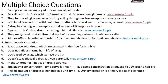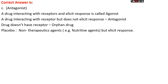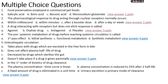The right answer is option C, antagonist. A drug which interacts with receptors and elicits a response is known as an agonist, while a drug that interacts with a receptor but does not produce any response is known as an antagonist. Drugs that don't have any receptor are known as orphan drugs. A non-therapeutic agent that elicits a response like an agonist — such as water — is known as a placebo.